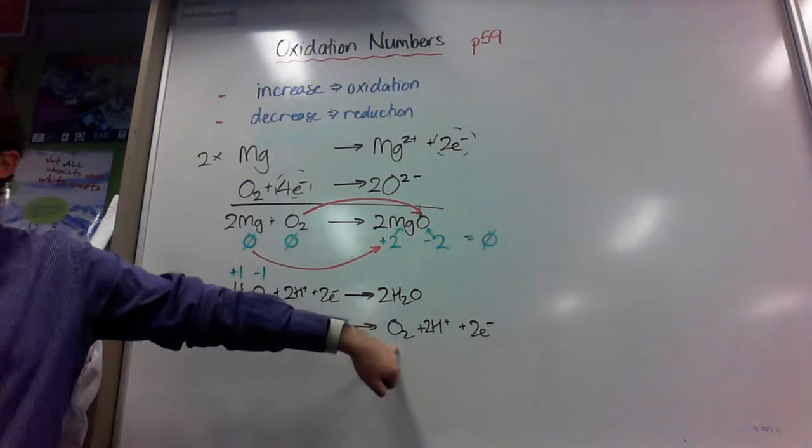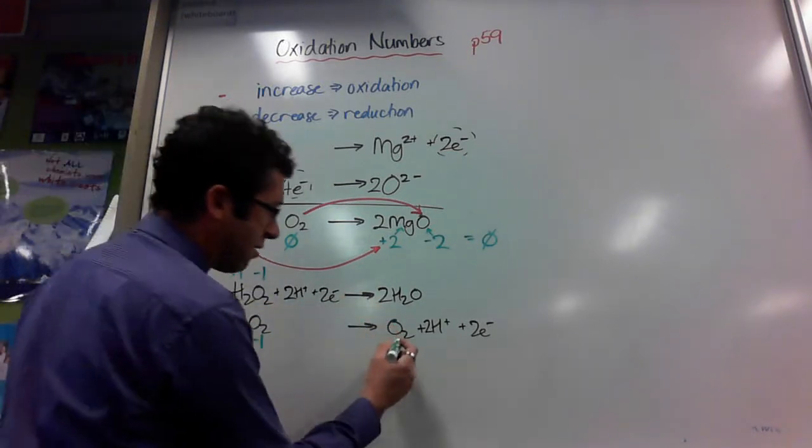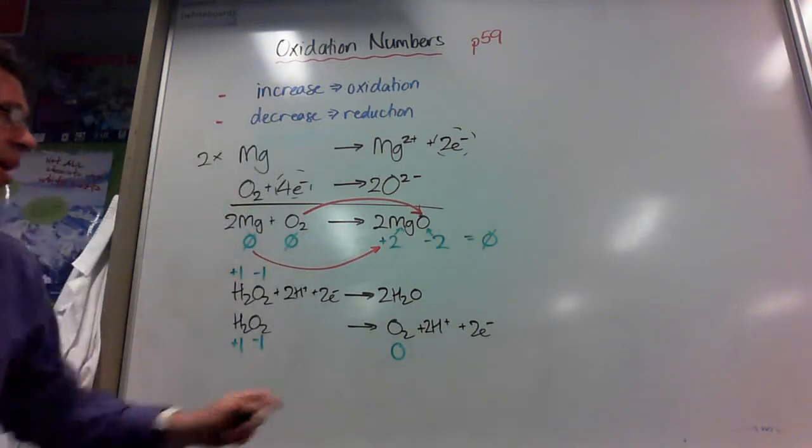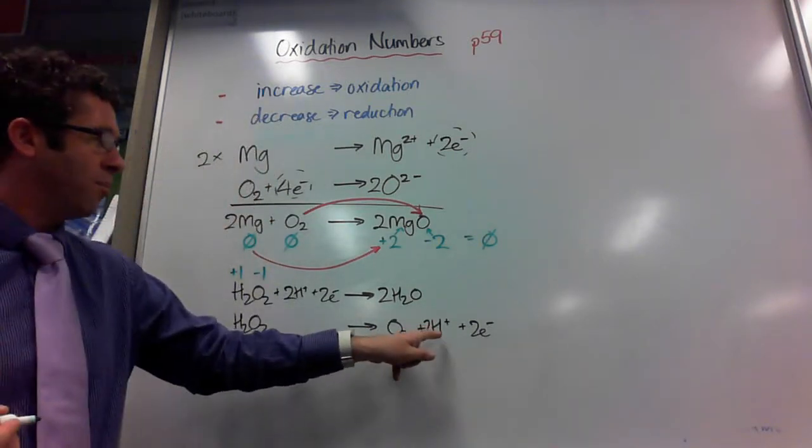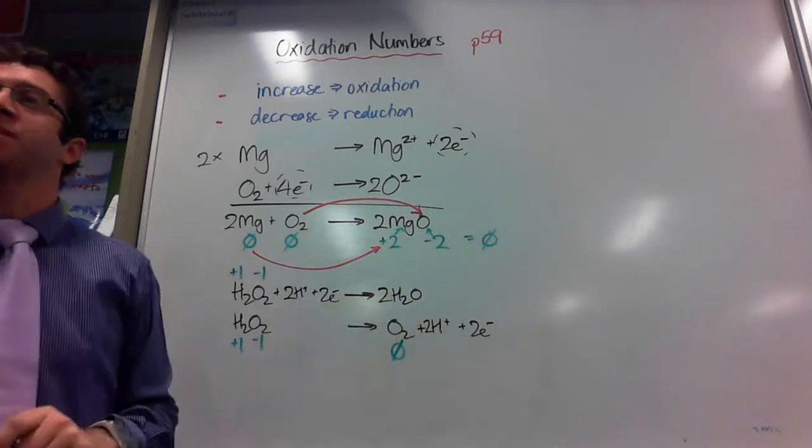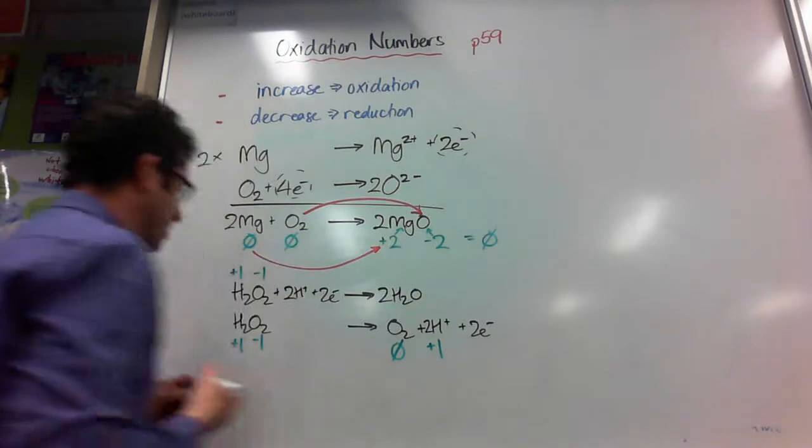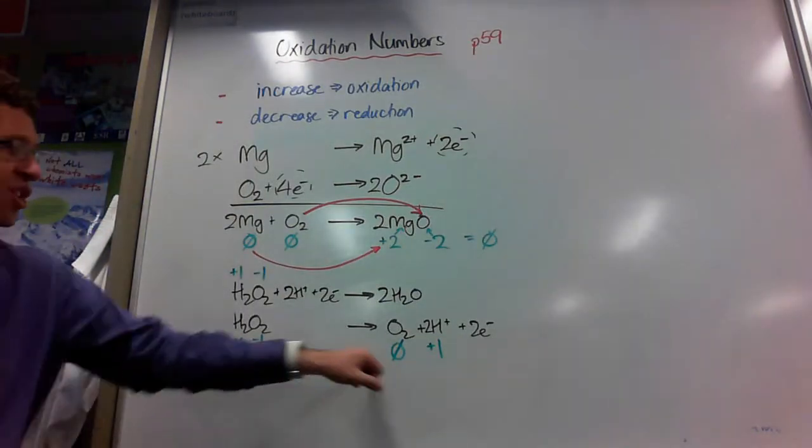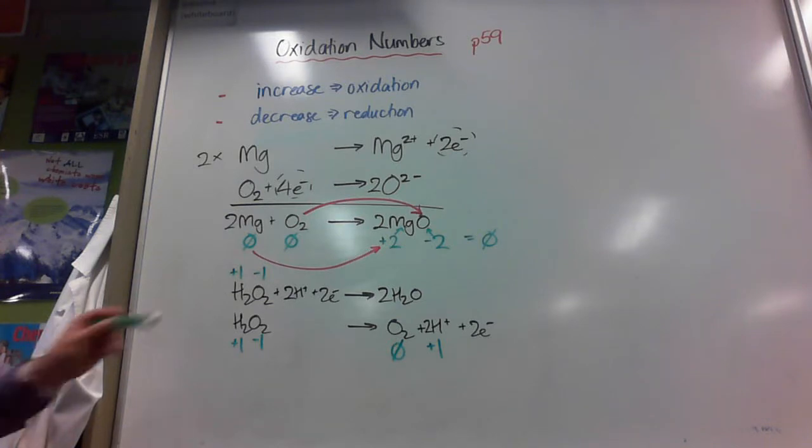So, look at this. It's made oxygen as an element. So, it must be zero here. Here's some hydrogen ions. What's that going to be? It's a monatomic ion with a charge of plus one, so it must be plus one. So, only the oxygens change oxidation state. The hydrogen has not.